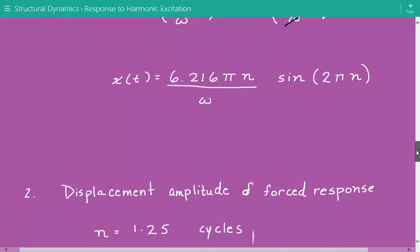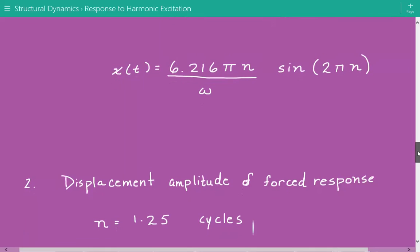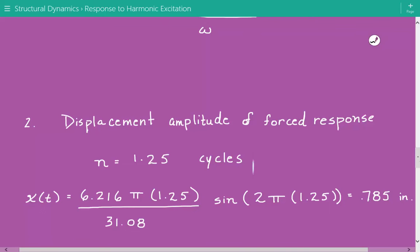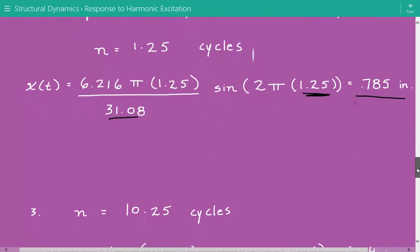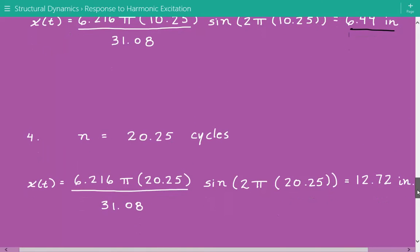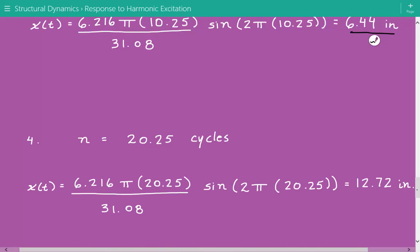Now we can easily calculate the displacement amplitude of the force response after any number of cycles. For 1.25 cycles, we plug in n equals 1.25 and omega is 31.08 times sine of 2 pi times 1.25. The displacement amplitude after 1.25 cycles equals 0.785 inches. We do the same thing: n equals 10.25 gives amplitude of 6.44 inches. For 20.25 cycles, the amplitude equals 12.72 inches.